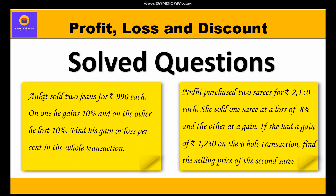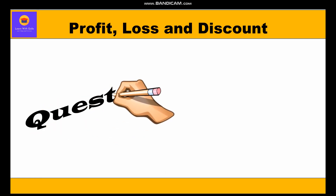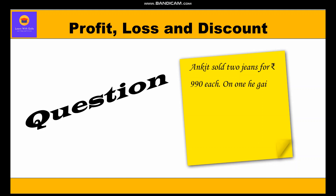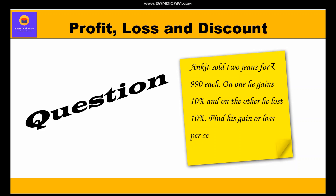Let's look at the first question. Ankit sold two jeans for rupees 990 each. On one he gains 10 percent and on the other he lost 10 percent. Find his gain or loss percent in the whole transaction.